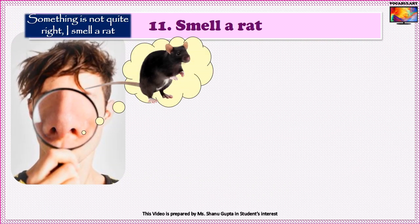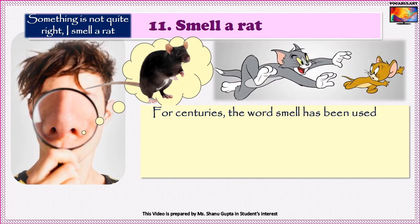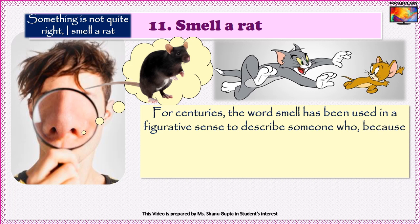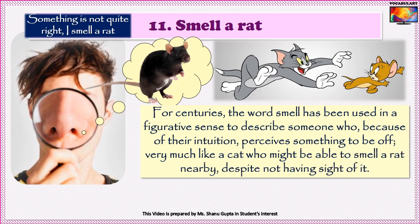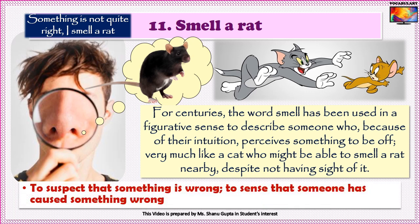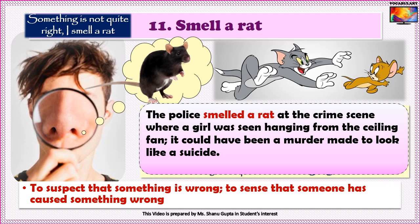Our eleventh idiom is To smell a rat. For centuries, the word smell has been used in a figurative sense to describe someone who, because of their intuition, perceives something to be off — very much like a cat who might be able to smell a rat nearby despite not having sight of it. So to smell a rat means to be suspicious. When you suspect that something is wrong or sense that someone has caused something wrong, you smell a rat. Example: The police smelled a rat at the crime scene where a girl was seen hanging from the ceiling fan — it could have been a murder made to look like a suicide.